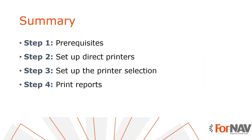Let's recap what we just did. The first thing we did was set up the Fornav direct printers; in the direct print service settings, we were able to set specific printer settings like paper source. Once we added the direct printers, we set up the printer selections, where we configured which report was printed on which printer for which user. Finally, we printed our reports. Reports printed with the Fornav direct print service were handled by the printer queue, while reports sent to the local printer were printed directly by the local PC.